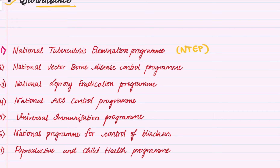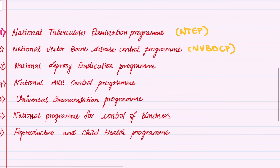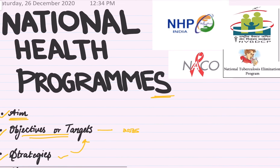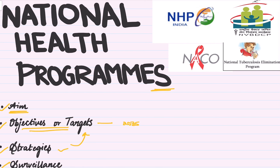Then we have the National Vector Borne Disease Control Program, which is going to be a long one, followed by the National Leprosy Eradication Program, National AIDS Control Program, Universal Immunization Program — which is very important — National Program for Control of Blindness, and the Reproductive and Child Health Care Program. We'll be covering all of these in a series of videos. If you like the video, please do like, share, and subscribe.